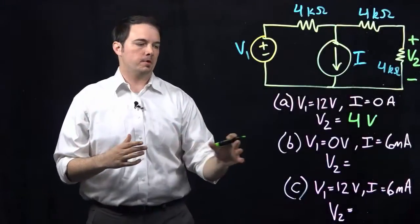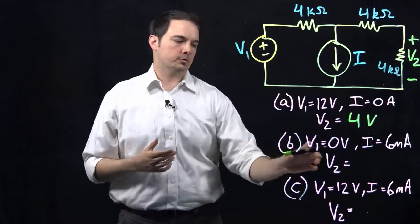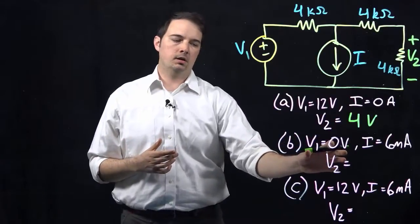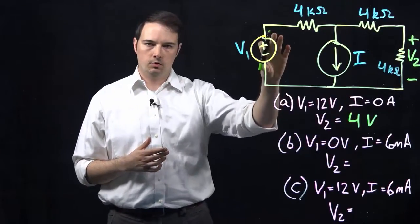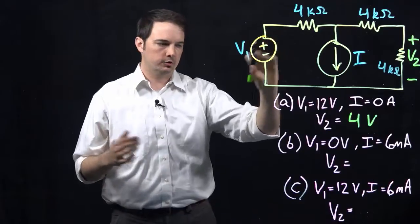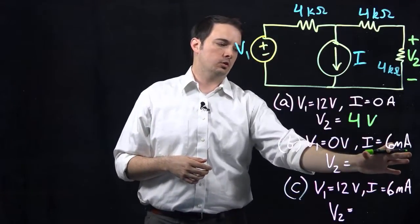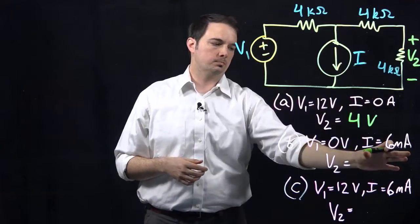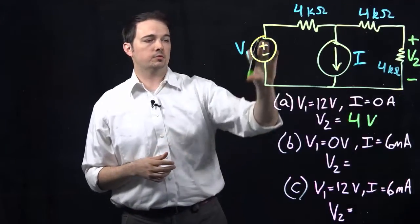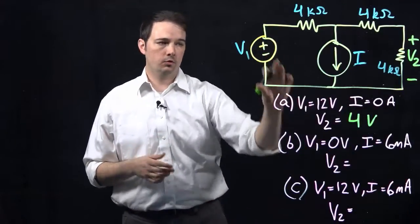For the second part of the problem here, we're looking at the opposite case. We're saying that our voltage source V1 is going to be equal to 0 volts, so it's not outputting any voltage at all. But our current source here in the middle branch is putting out a total of 6 milliamps.